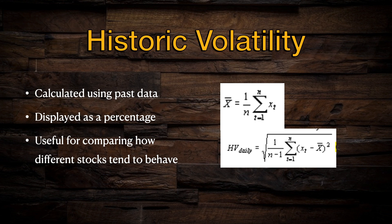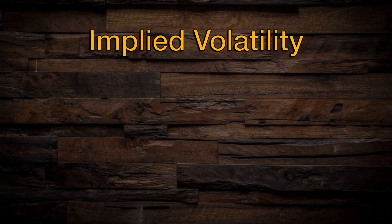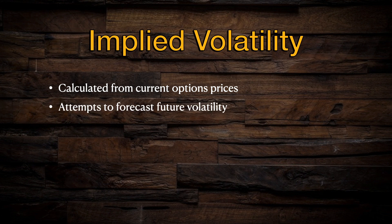But when it comes to trading and options, it's often more useful to look at implied volatility. Unlike historic volatility, implied volatility is not calculated using past data. Implied volatility is calculated directly from the pricing of option contracts on a particular stock or asset. Rather than looking at how volatile an asset has traded in the past, implied volatility attempts to forecast how volatile that asset might be in the future.